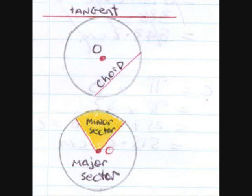And a chord doesn't go through the centre. What it does is it goes between two points of the circumference, the side of the circle.